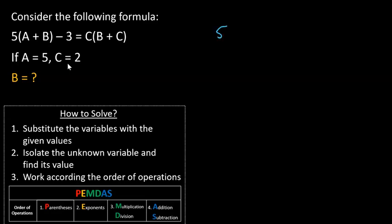We have five times A which is five plus B minus three equals C which is two times B plus two.